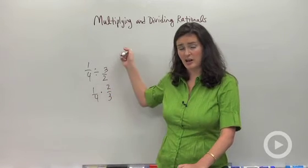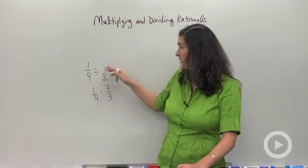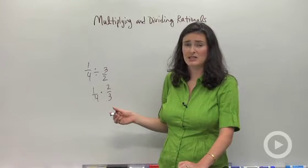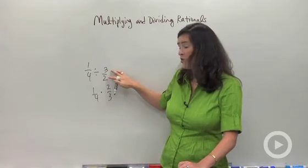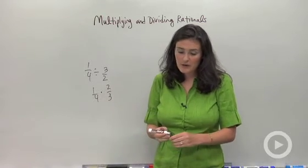That's going to become really important when you start dividing rational expressions. It's going to be the same thing. You're going to be flipping your second fraction, keeping all of the same exponents, all the same positives and negatives. If you have a division problem, your second guy just turns upside down. So be really careful with that.